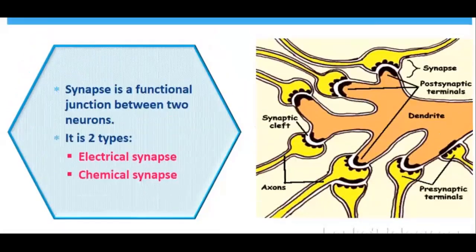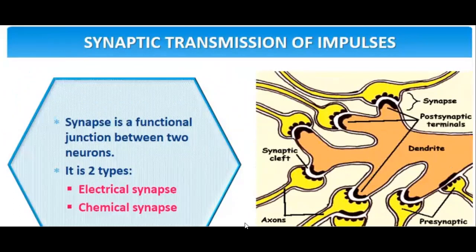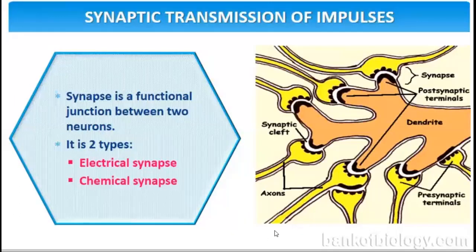Hello students, welcome to Easy Biology Tutorials. Yesterday we had already covered the topic of generation and conduction of the impulse. In that video we read about the importance and meaning of resting potential, the action potential, and the propagation of the action potential — how the generation of impulse takes place through a neuron. But from one neuron to another, there will be synaptic transmission of impulse. We are going to read about that now.